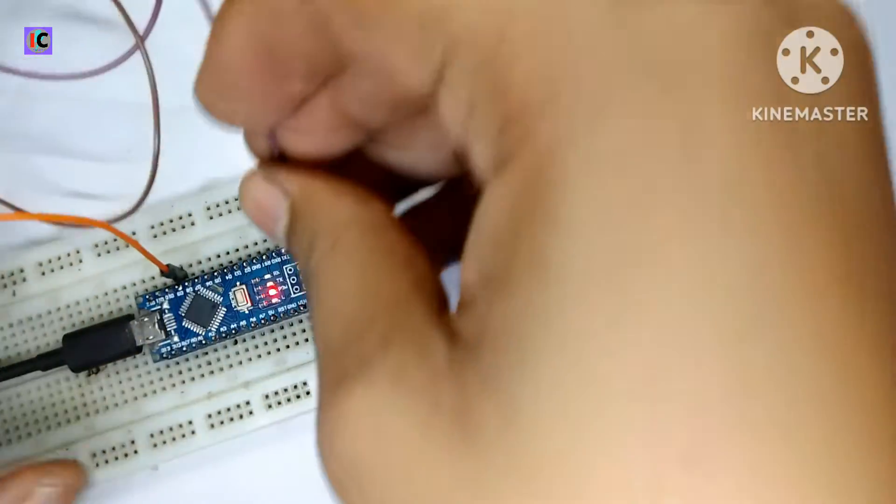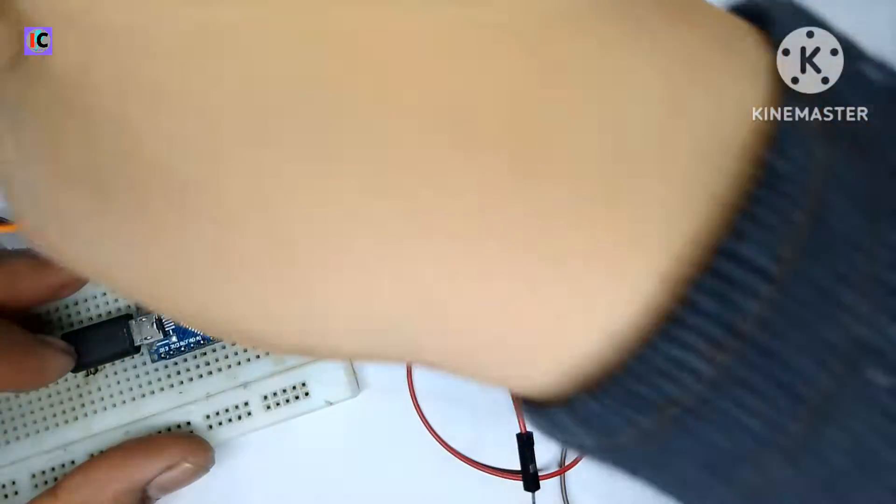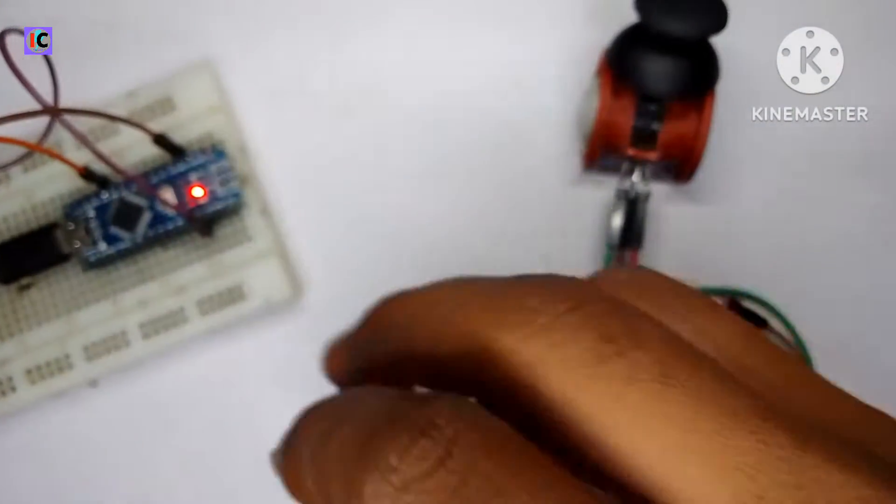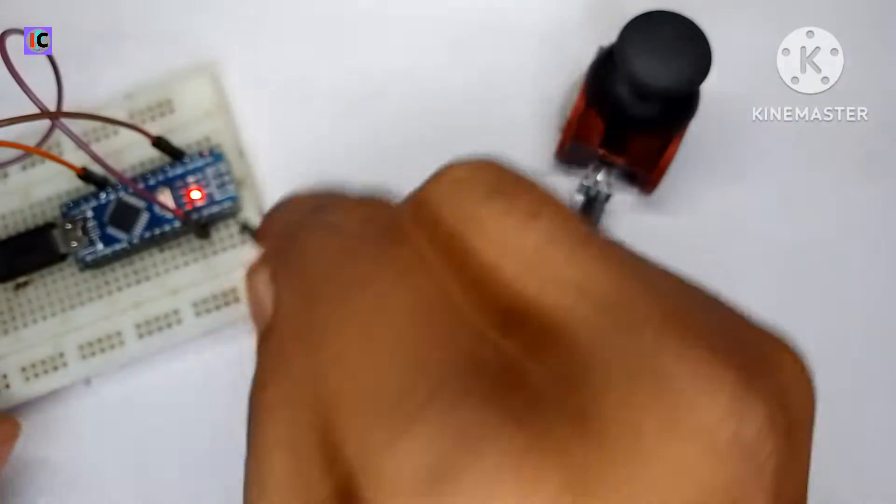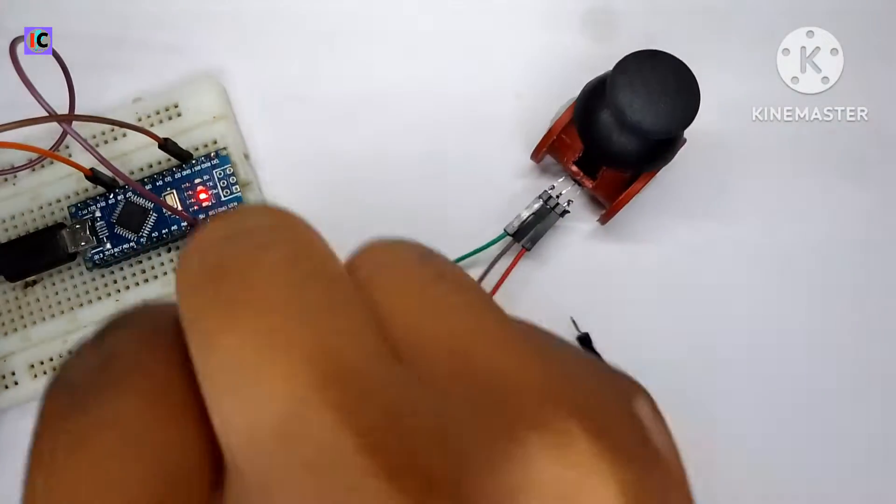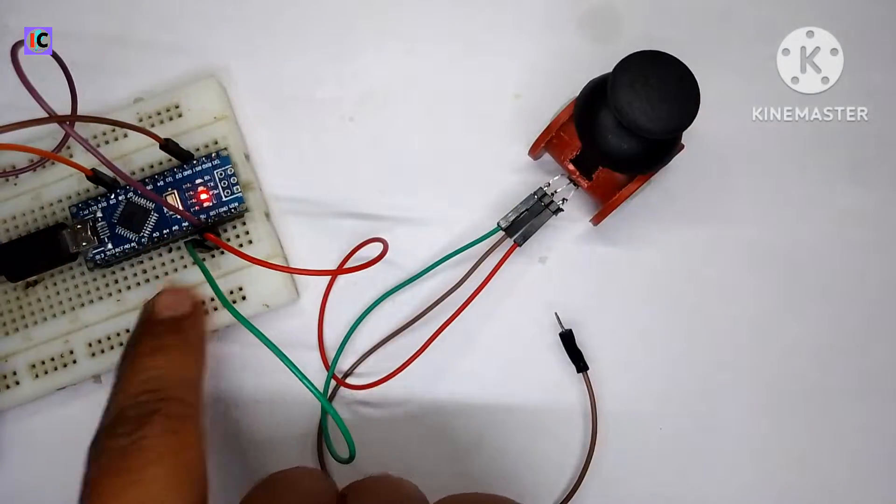After this, I'm going to connect this joystick module. It's 5 volt, the output pin is connected to the analog 7 pin, and ground to ground.